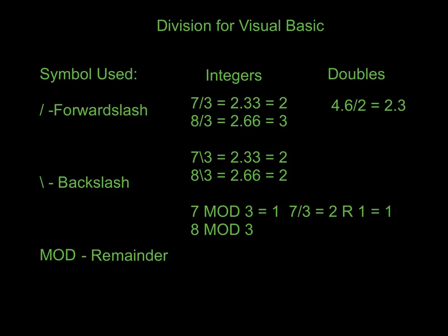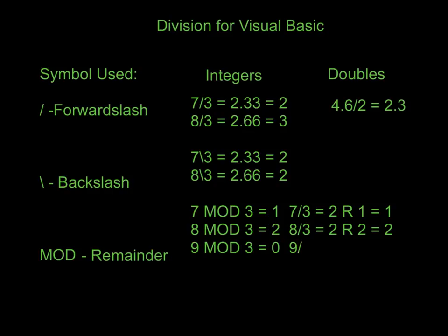Let's do it again for 8. 8 mod 3 equals 2, because 8 divided by 3 is 2 remainder 2. It is also possible that if we do 9 mod 3, it equals 0, because 9 divided by 3 equals 3 remainder 0. Mod is going to be used often, and we're going to do a couple programs that focus on why we use it, because we want to leave numbers left over so we can continue to recalculate them.